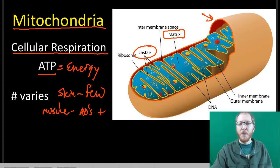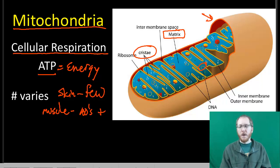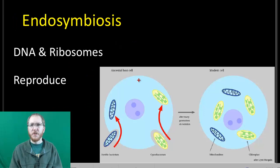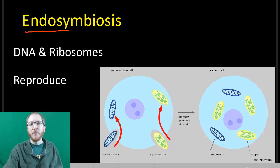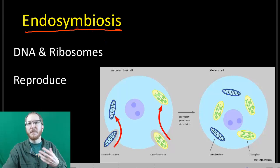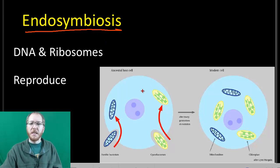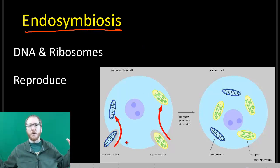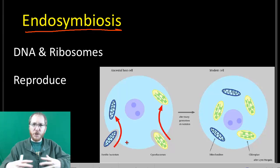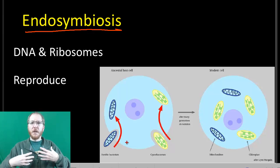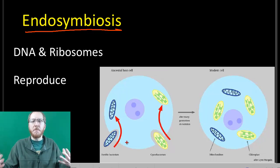Another cool thing about mitochondria is they have their own DNA and their own ribosomes — you can see those little dots in the picture. When we talk about the mitochondria, it appears they came from a prokaryotic cell through a process called endosymbiosis. 'Endo' means in, 'symbiosis' means to live with. It appears that a larger early eukaryotic cell would have engulfed a particular prokaryote that was able to do aerobic respiration efficiently.